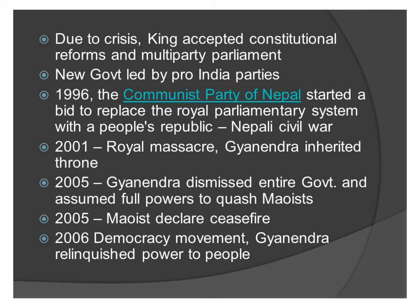In 1996, the Communist Party of Nepal started a bid to replace the royal parliamentary system with a people's republic, leading to a Nepali civil war. In 2001, a royal massacre occurred in which the Prince of Nepal murdered the entire royal family, including the king himself. King Gyanendra, the brother of King Mahendra, then inherited the throne. In 2005, Gyanendra dismissed the entire government and assumed full powers to quash the Maoists. In 2005, the Maoists declared a ceasefire. In 2006, the democracy movement started and King Gyanendra had to relinquish power to the people.